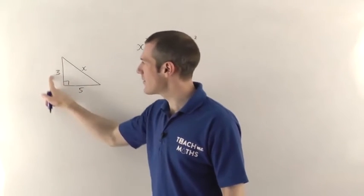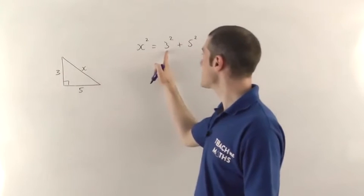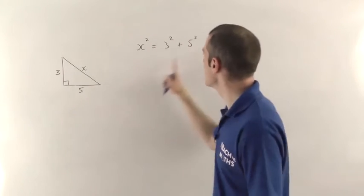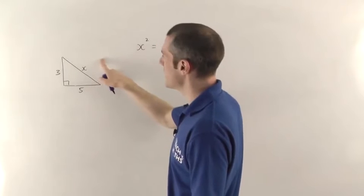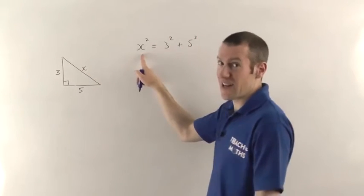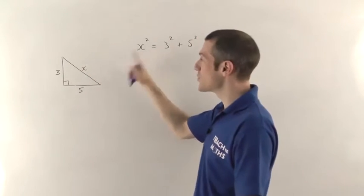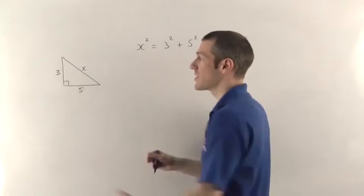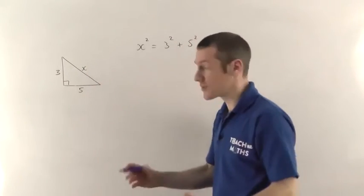Yeah, because this area of the square that would appear on this side is going to be 3 squared. The area of the square here would be 5 squared and that will give us the area of the square here which would be X squared. Whatever the length is, we don't know what it is yet. When you square it, that will give you the area of that square. So the areas of the two smaller squares always add to give the area of the bigger square.